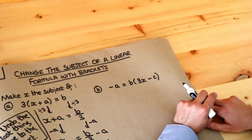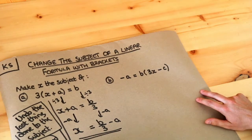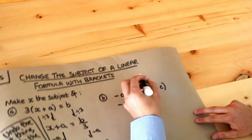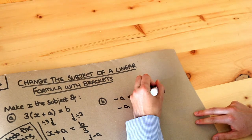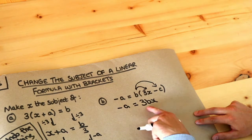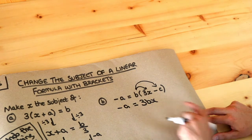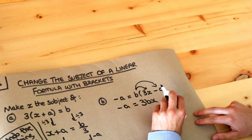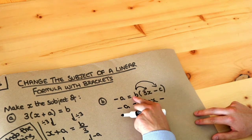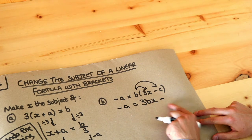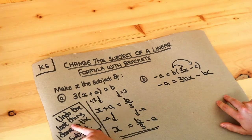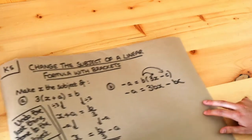What about this second example? I'm going to use the expand-brackets-first approach. The b gets multiplied by each of the things inside the bracket. So b times 3x is 3bx — remember we put variables in alphabetical order, b first then x. And then b times minus c: notice it's minus, because positive times negative is negative, and b times c is bc. So we get 3bx minus bc. Then we can do the usual thing: undo the last thing done to the subject.